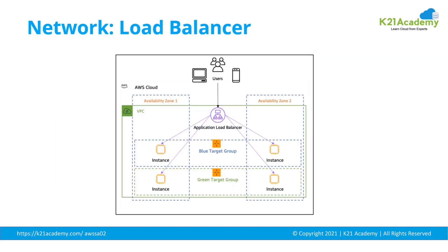You also have load balancers under networking. The role of a load balancer is to distribute or balance the load across different servers running under different availability zones. You can deploy a load balancer and distribute traffic between machines using different algorithms — for example, round robin, where the first request goes to instance one and the second to instance two, or weighted distribution like 75% to one instance and 25% to another.